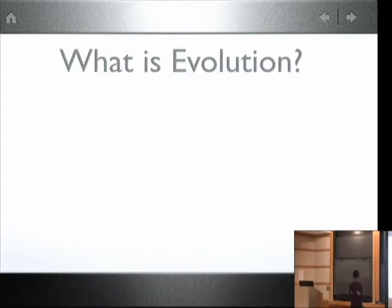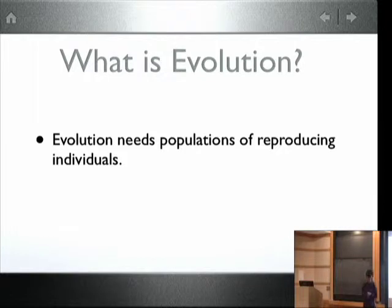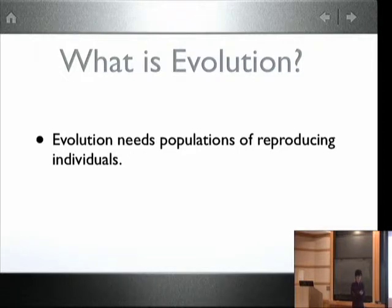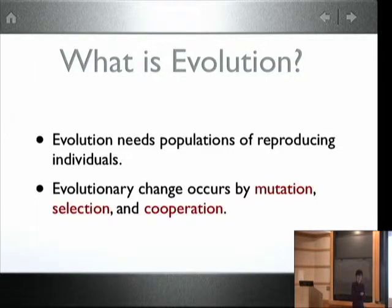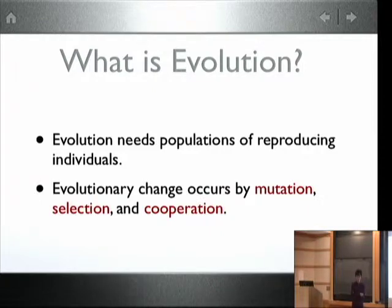So what is evolution? I think even every school child has some idea about what evolution is. Basically, if you have reproduction, you'll have evolution. In reproduction, mistakes are inevitable. So mutations are mistakes in information transfer and reproduction. And when there is mutation, different variants arise — some do better, some do worse. To biologists, better means having more offspring. So mutation and selection are the key elements of evolutionary change, and my goal today is to convince you that cooperation is another essential aspect, and how game theory can be used to understand the evolution of cooperation.